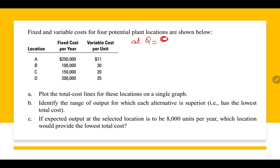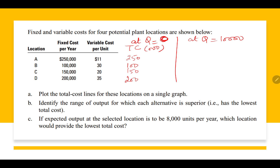At quantity equal to 0, I can make a column of total cost, which will be 2,50,000, then 1,50,000, 2,30,000, and 2,00,000. For the next point, I can take quantity as 10,000. I am assuming this quantity as 10,000.